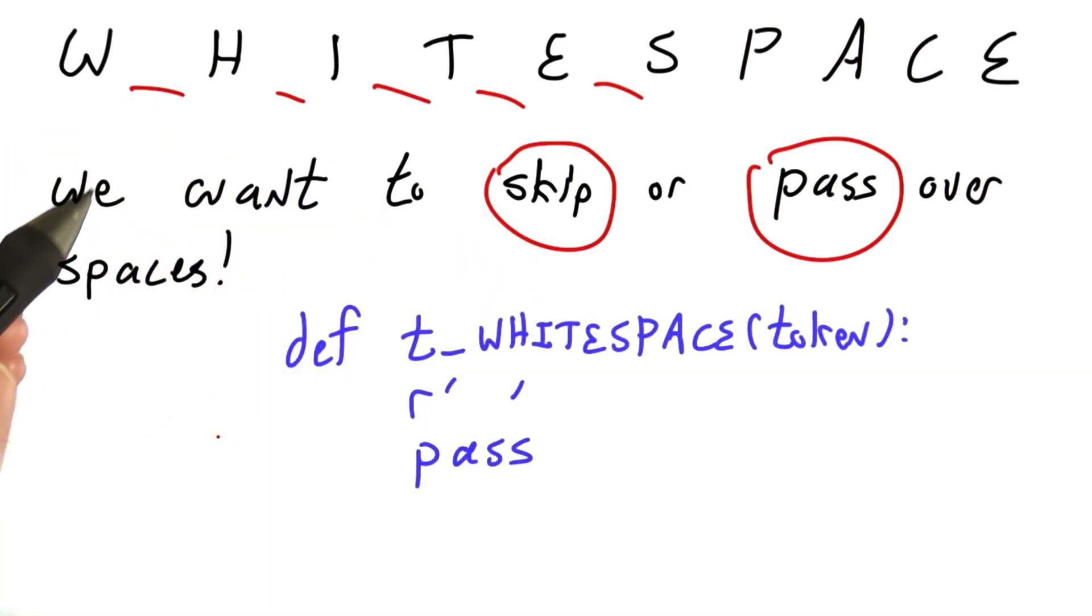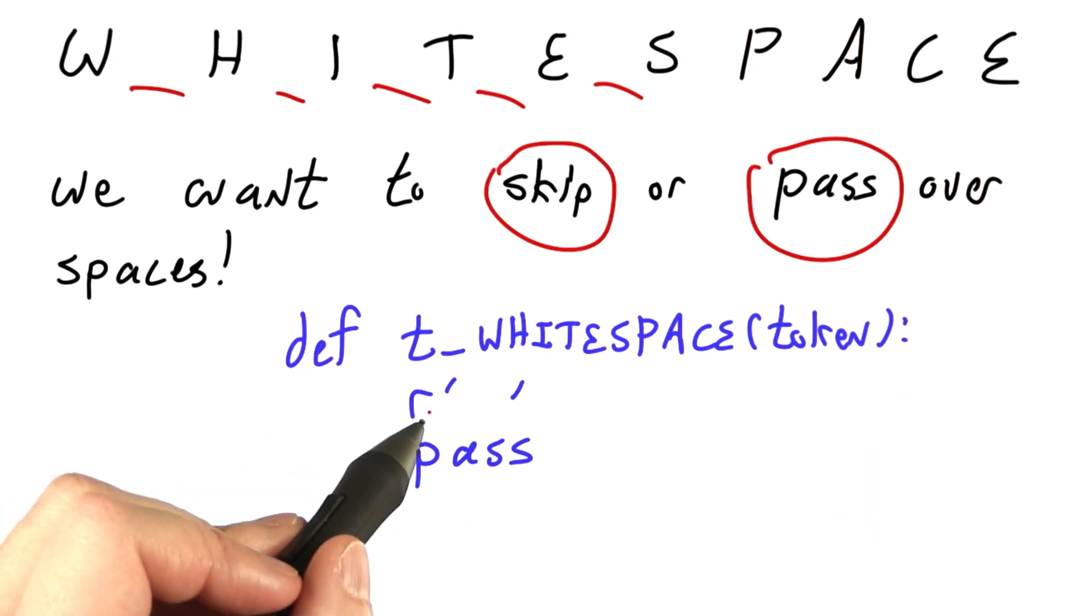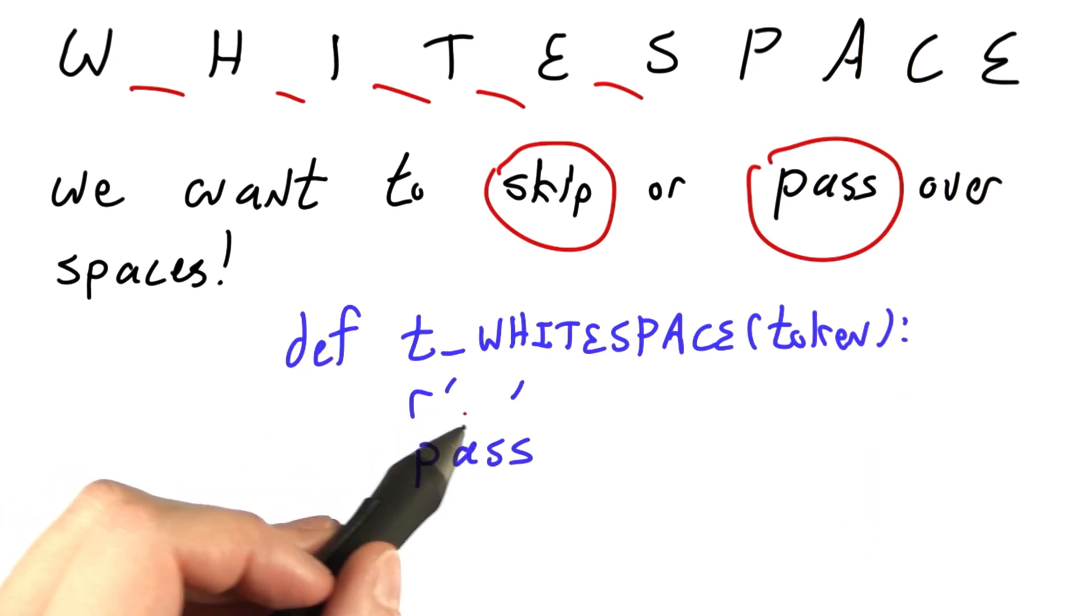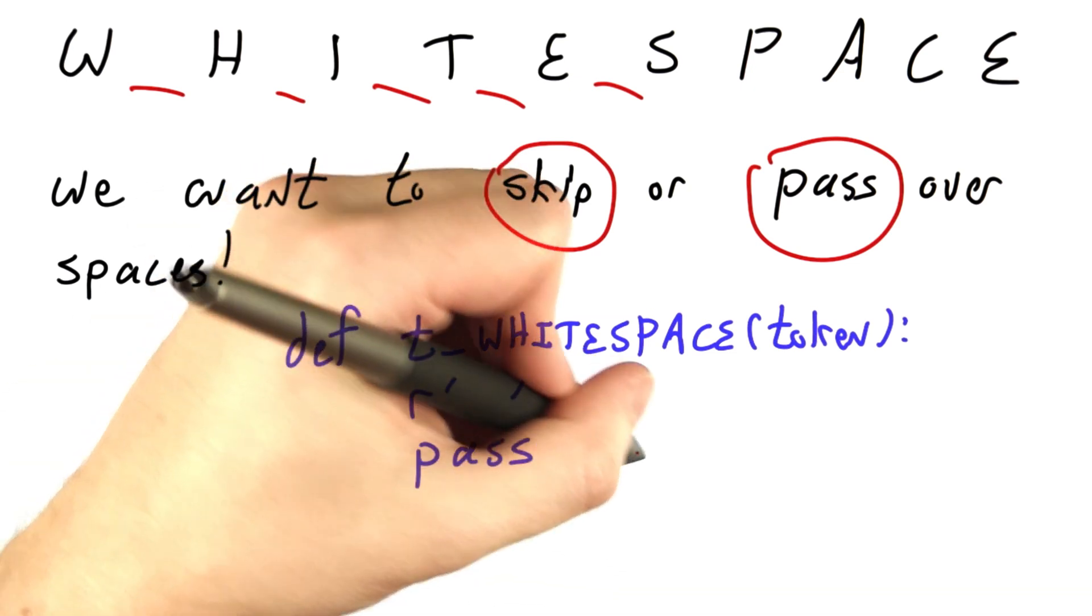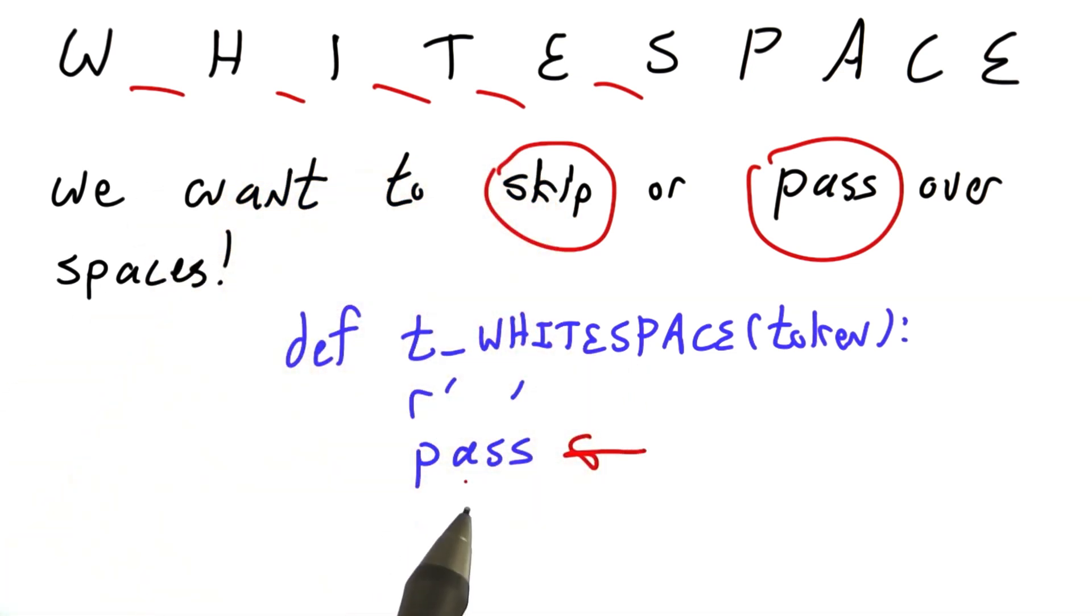We do that using the same sort of token definition as before. So here I've made a regular expression that just matches a single space. But instead of returning the token, we pass it by. This is the power.